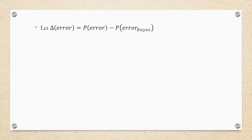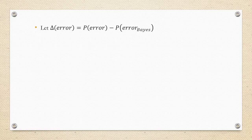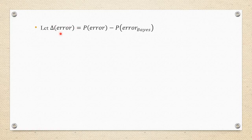Let's define a new term: the delta error, or difference in error, between the probability of error under the arbitrary decision rule and under the Bayes decision rule. If we can show that this difference in error is always greater than or equal to zero, that is equivalent to saying the arbitrary rule's error is always at least as large as the Bayes error — which proves the Bayes decision rule is optimal. So we want to show that this change in error is always greater than or equal to zero.